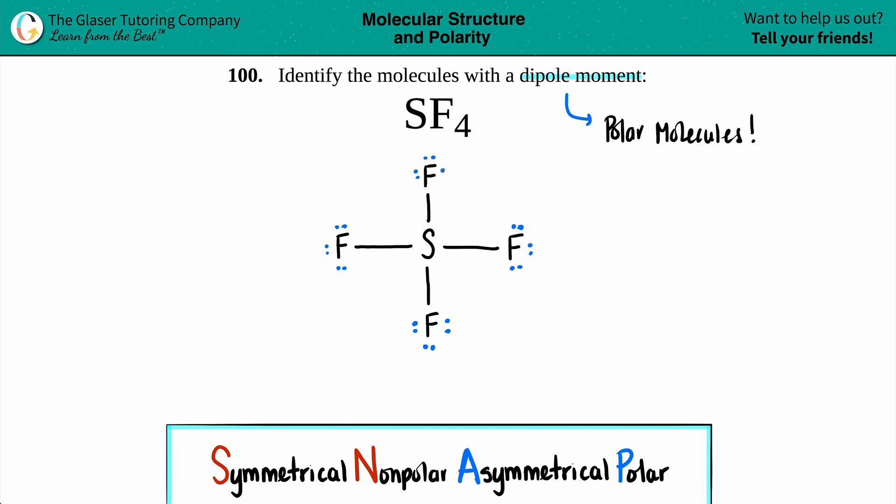And now sulfur, on the periodic table, sulfur has six electrons. It used four of them, one, two, three, four, to make a bond. So it has one lone pair, five and six. Okay, here's my Lewis structure. We just have to figure out if this is a polar molecule.